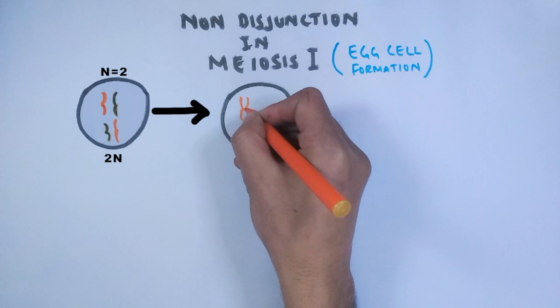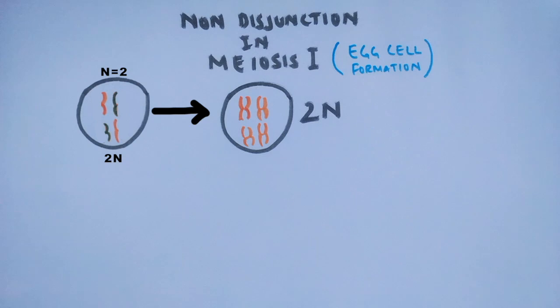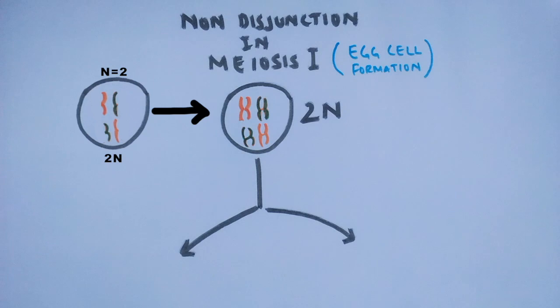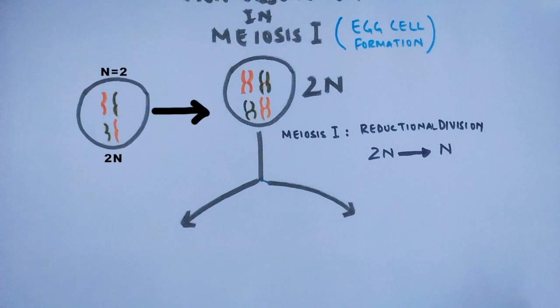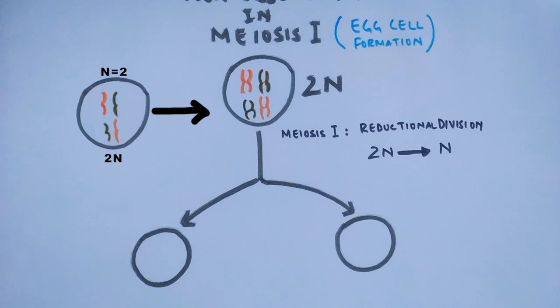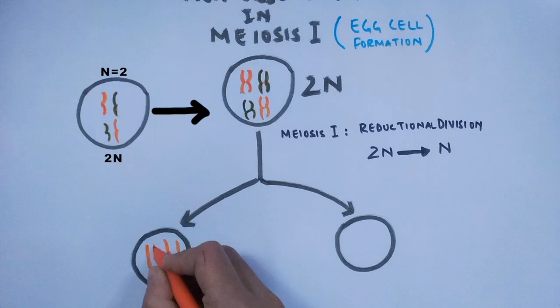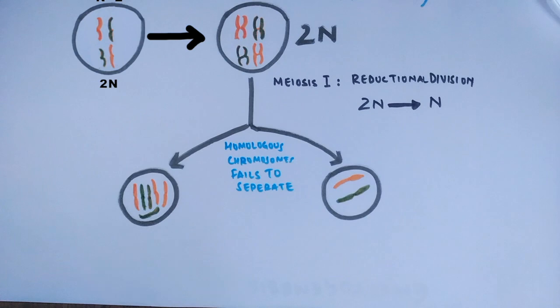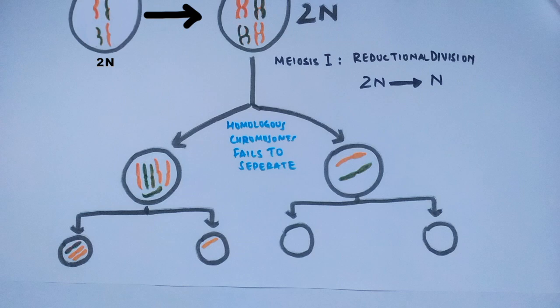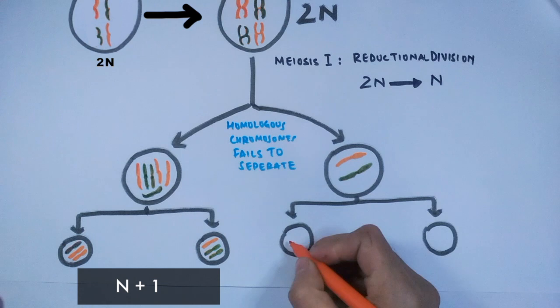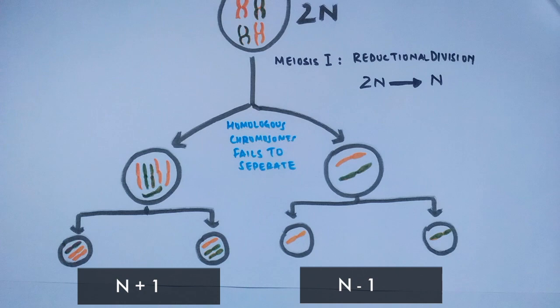First we have an oogonium cell, a diploid cell in the 2n condition. Taking a cell with n=2 as an example, it matures into a primary oocyte while doubling its chromatids only, so the primary oocyte has the same 2n condition but with four chromatids (4c). During meiosis I — the reductional division (2n to n) — we expect two cells each receiving four chromosomes. But due to an error such as spindle disruption, some homologous pairs fail to separate. One cell gets six chromosomes and the other gets only two. The cell with six chromosomes then divides into two cells with three chromosomes each (n+1 condition), while the other produces two cells with only one chromosome each (n−1 condition). n+1 is trisomy and n−1 is monosomy.